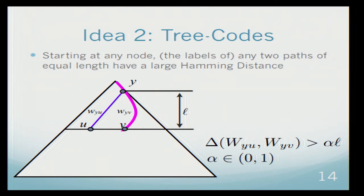The property is the following. Start at any point, any node in the tree, and take two paths that go down from this node of the same length. Then the labels on these paths will have a large Hamming distance. In this case, the Hamming distance of the labels here and the labels here will be larger than alpha L, where L is the length of the path, and alpha is some parameter of the tree that we can choose between zero and one. This is how strong the code is.